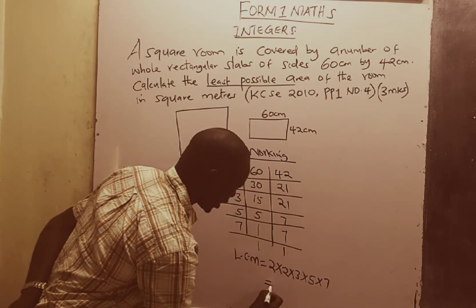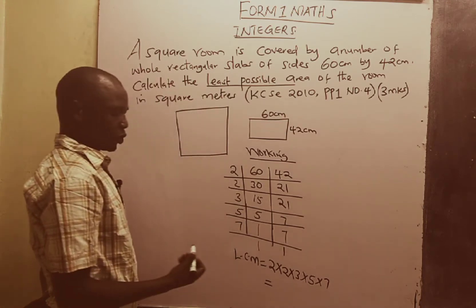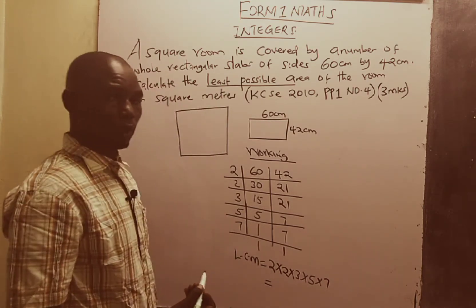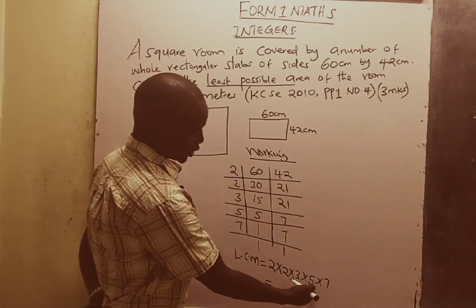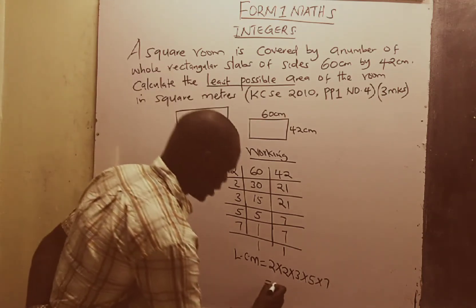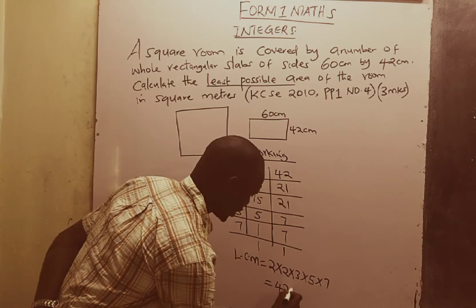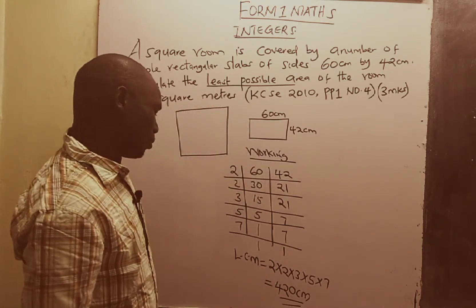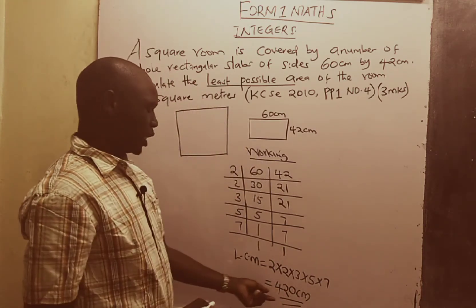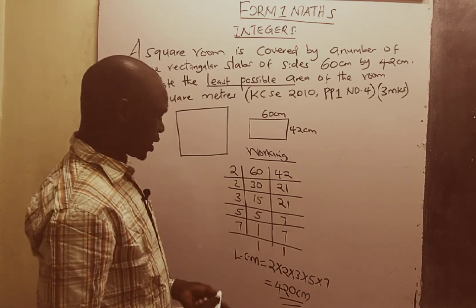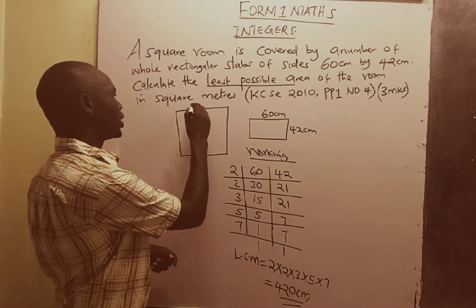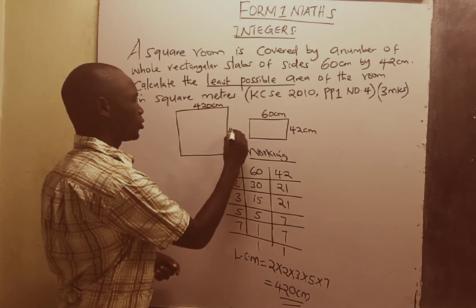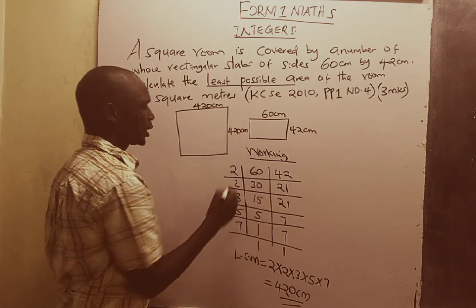If you take 2 times 2, that gives us 4. 4 times 3 gives us 12. 12 times 5 gives us 60, and 60 times 7 gives us 420 centimeters. So by looking at the LCM, we get one side of the room — meaning this side is going to be 420 centimeters, and this side is also going to be 420 centimeters.